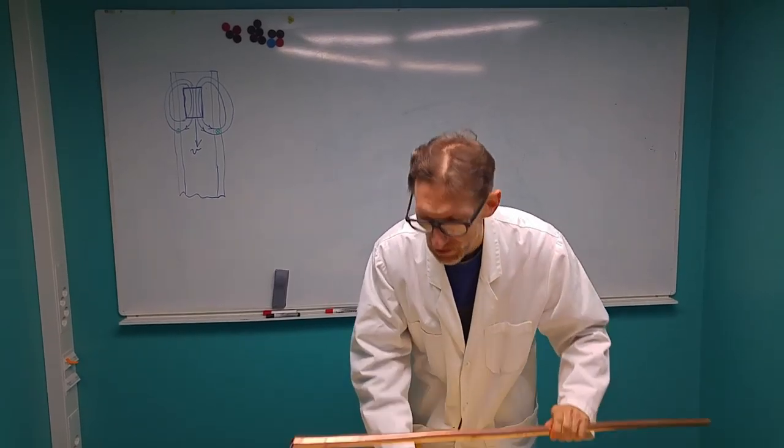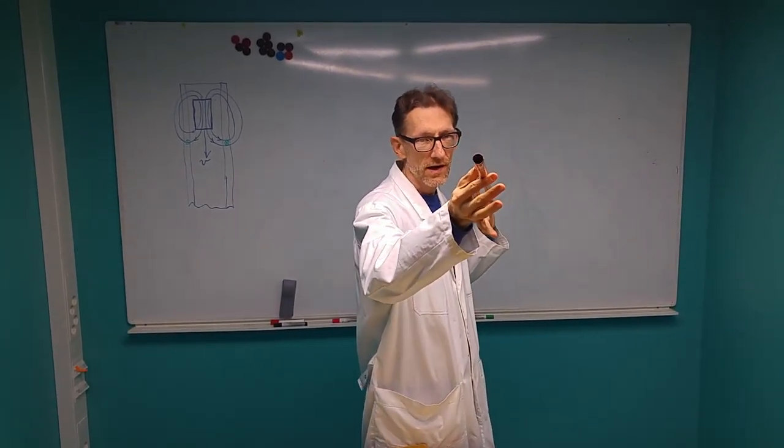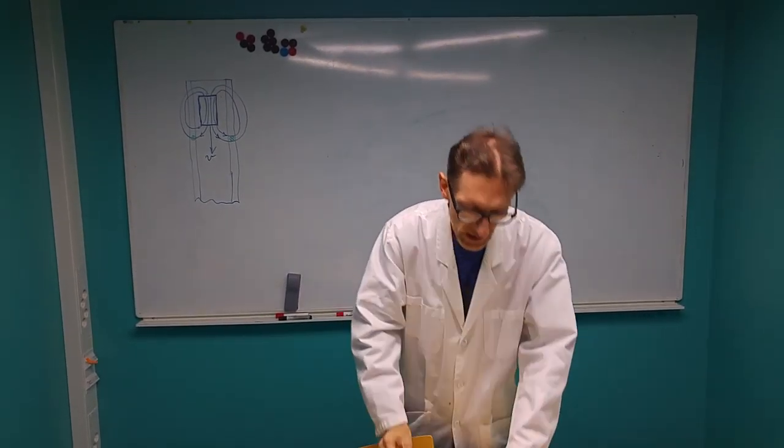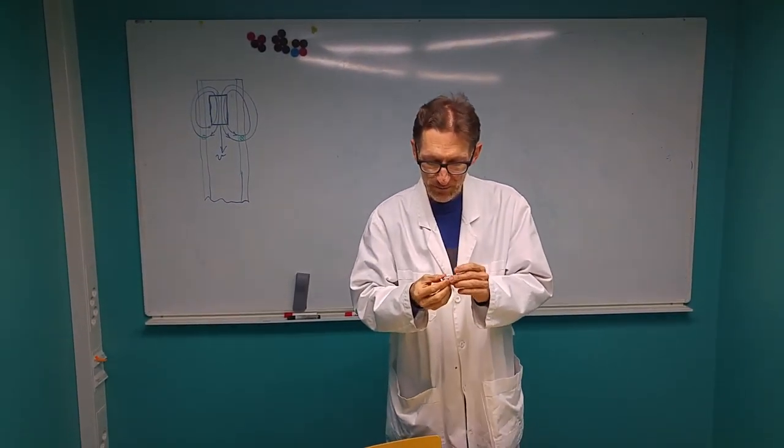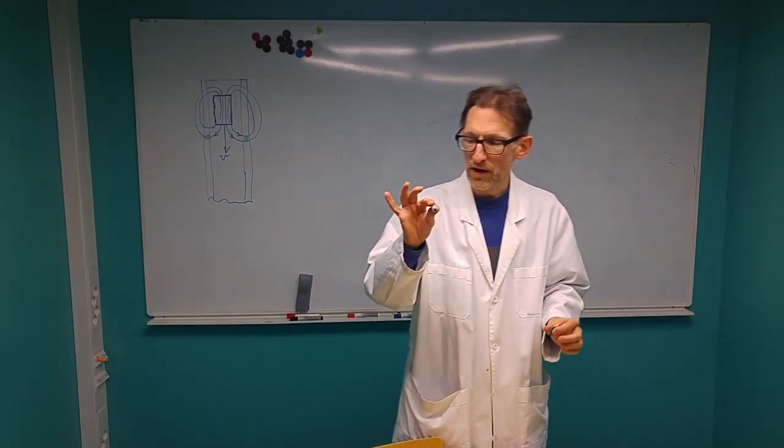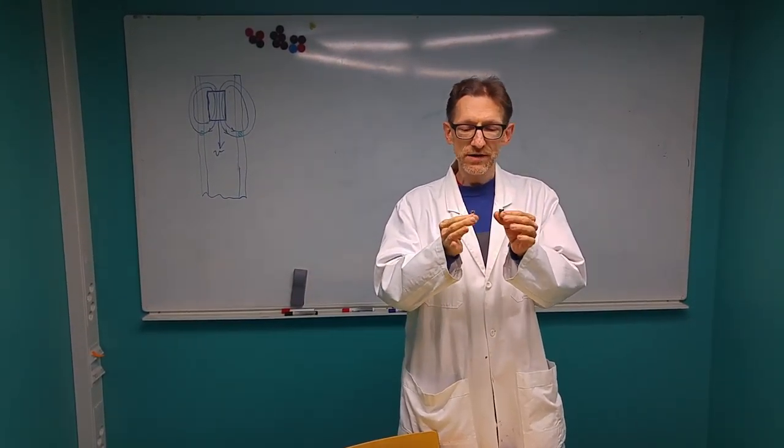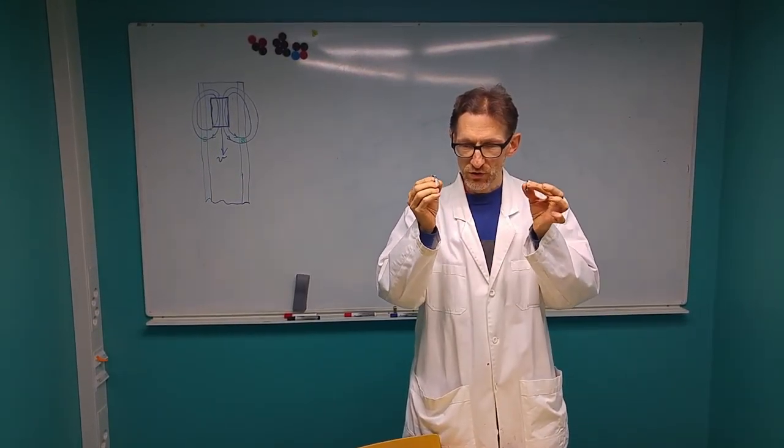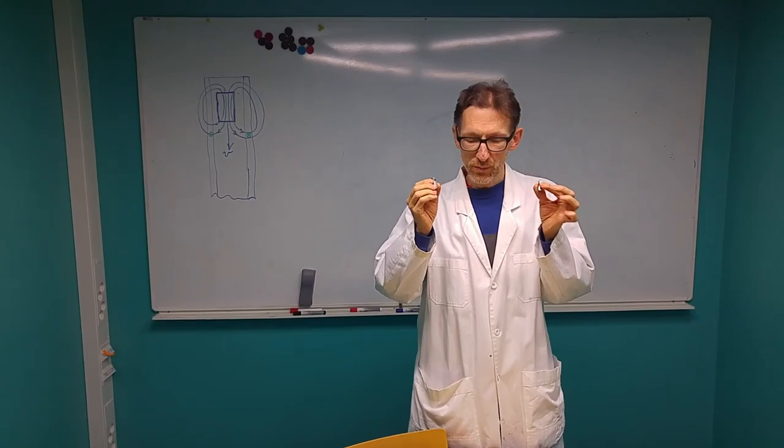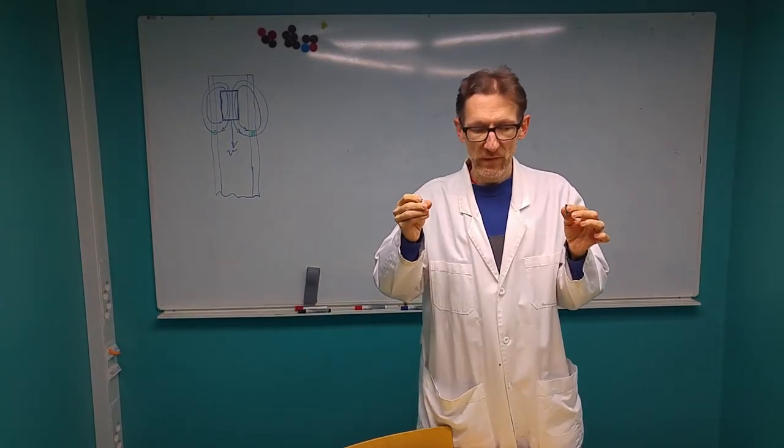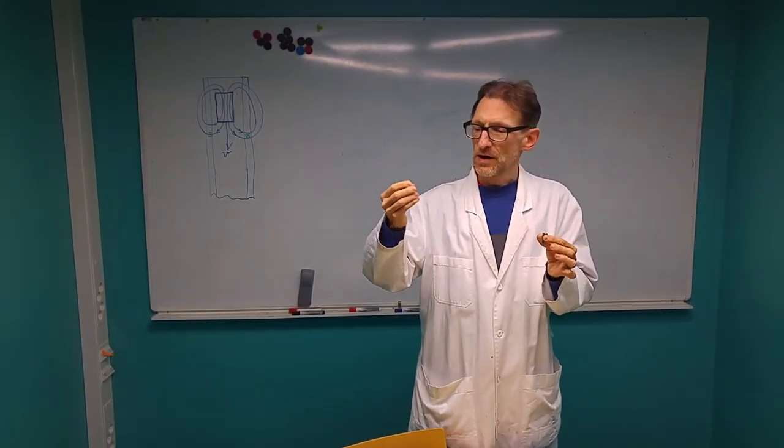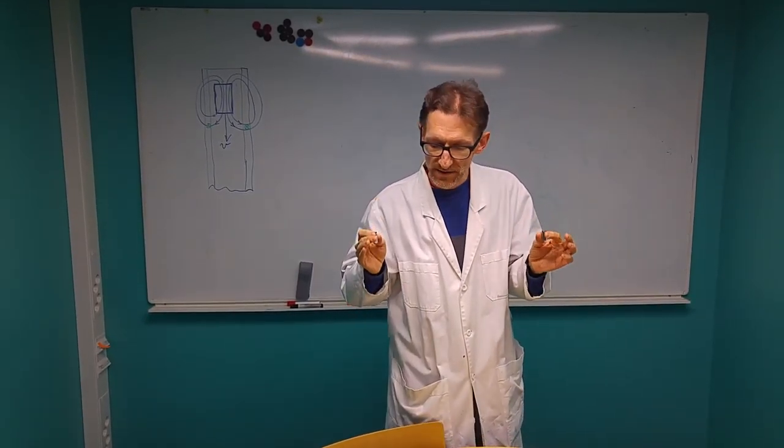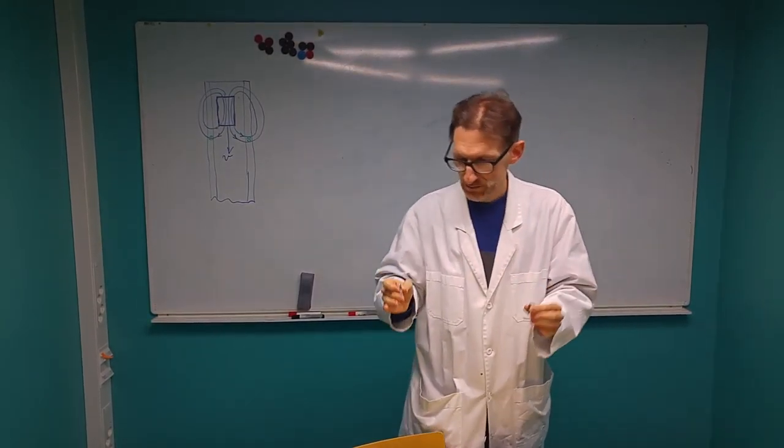So we have the copper tube. We have a neodymium magnet and we also have a plug that has pretty much exactly the same weight and diameter as this magnet. And we are going to use this to compare the magnetic drag versus the aerodynamic drag. We are going to do the maths and this comparison at the end.